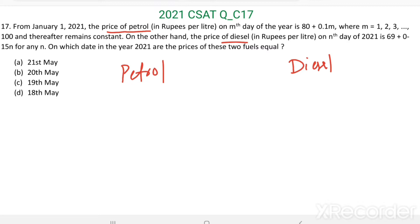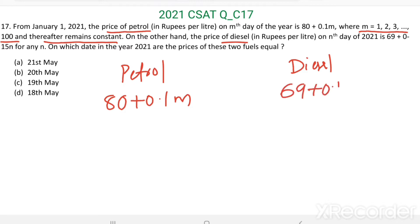The price of petrol is varying by the function 80 plus 0.1m, where m is varying from 1 to 100, and thereafter, after 100 days, it remains constant. On the other hand, the price of diesel is varying by the function 69 plus 0.15n, for any value of n. On which date in the year 2021 are the prices of these two fuels equal? That is what we have to find.